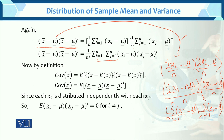Now by definition, what is the covariance of x? The covariance is defined as the expected value of (x minus E[x]) times (x minus E[x]) transpose. Now by definition, the covariance of x̄ equals the expected value of (x̄ minus μ) times (x̄ minus μ) transpose.